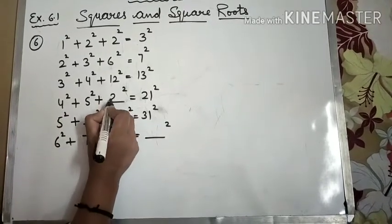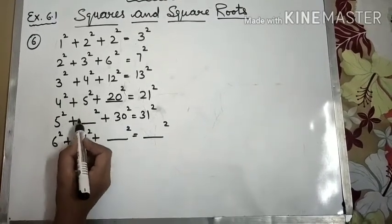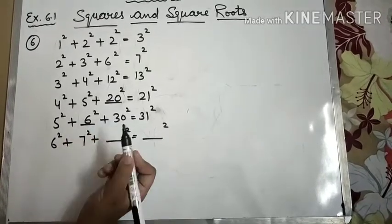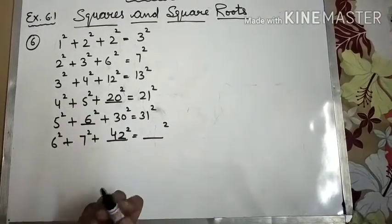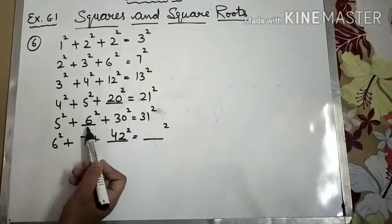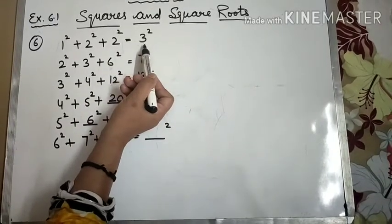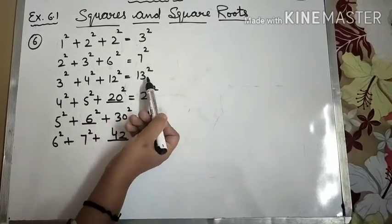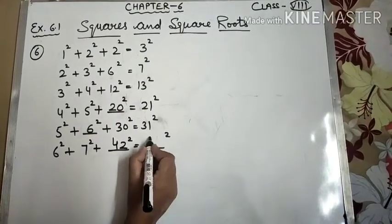4×5 is 20, 5×6 is 30, 6×7 is 42. We have filled these numbers. Now according to these numbers, the pattern continues: here is 2², here is 3², then 7. Next is 13, then 21, then 31, 42, then 43.